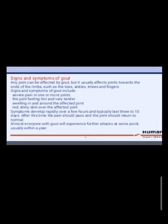Signs and symptoms of gout: Any joint can be affected, but gout usually affects joints towards the ends of the limbs such as the toes, ankles, knees and fingers. Signs and symptoms include severe pain in one or more joints, the joint feeling hot and very tender, swelling in and around the affected joint, and red shiny skin over the affected joint.